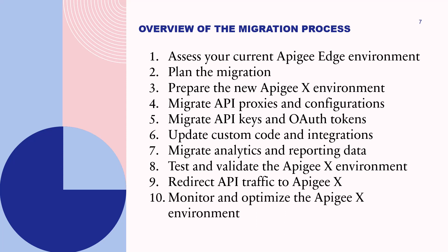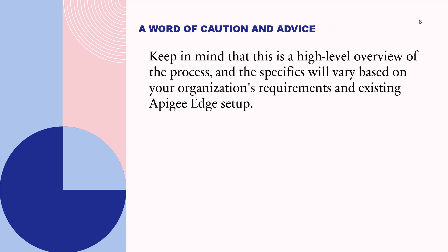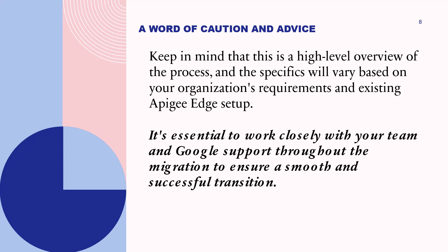Finally, monitor and optimize the Apigee X environment after completing the migration: continuously monitor performance, security, and usage, and optimize configurations and policies to improve performance and meet evolving business requirements. Keep in mind this is a high-level overview and the specifics will vary based on your organization's requirements and existing Apigee setup. It is essential to work closely with your team and Google support throughout the migration to ensure a smooth and successful transition.